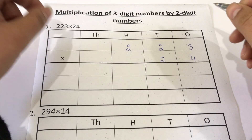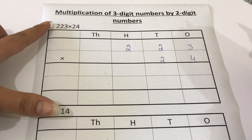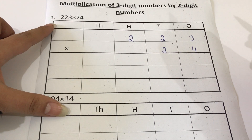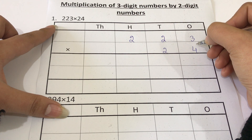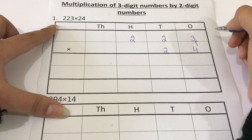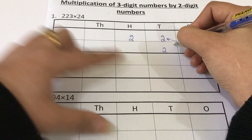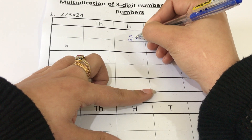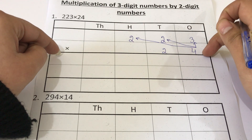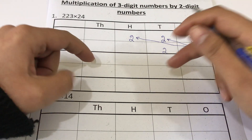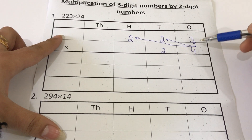As I told you in the previous video, when you have to multiply by any two-digit number, you will always start multiplication from the ones place. My digit in the ones place is four, so firstly I will multiply this four with three, then with the digit in the tens place two, and lastly with the digit in the hundreds place two. First, draw a straight line below these two numbers.